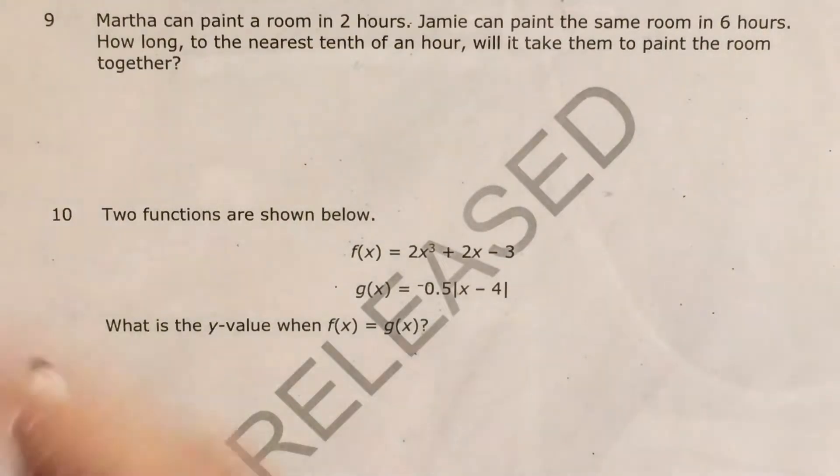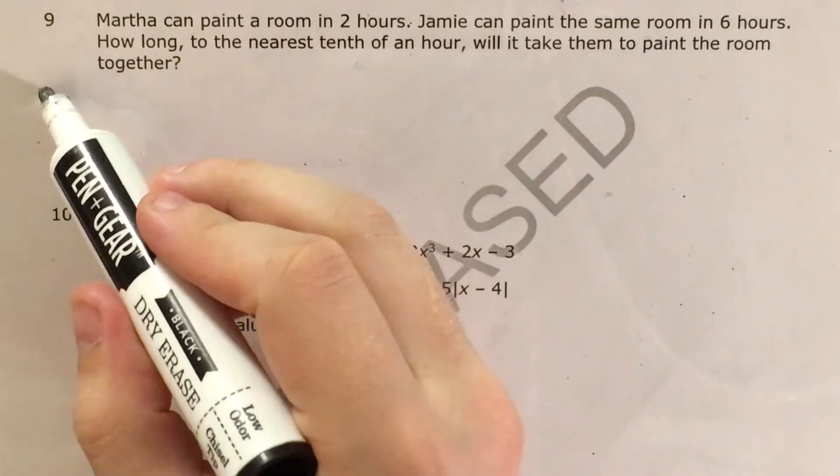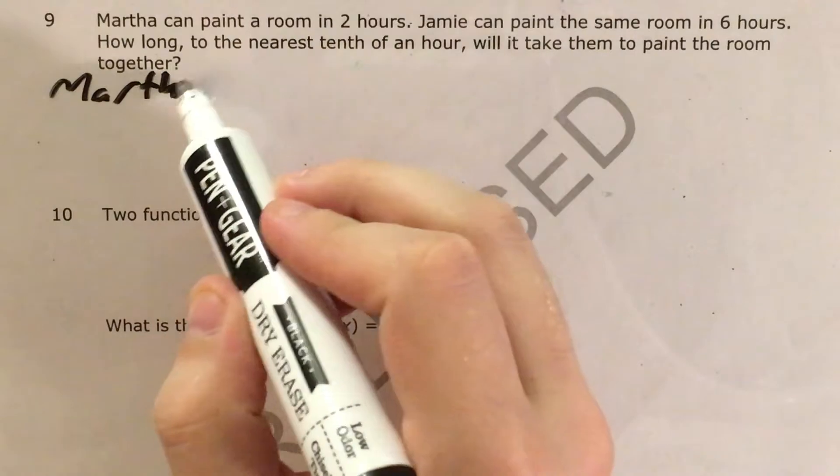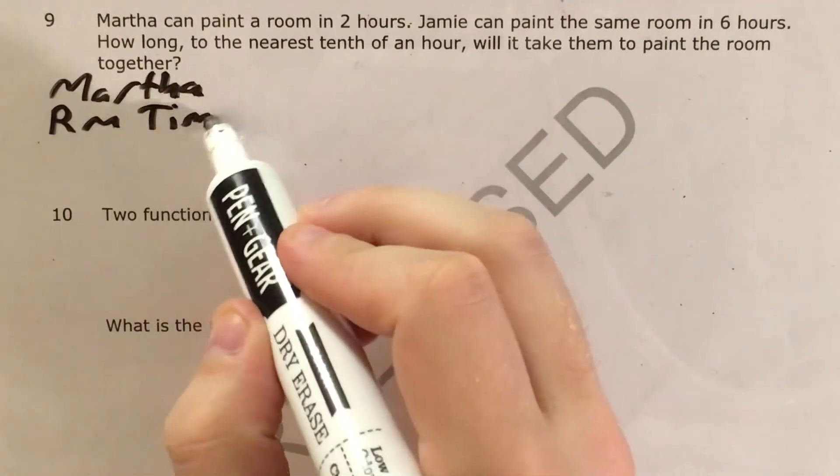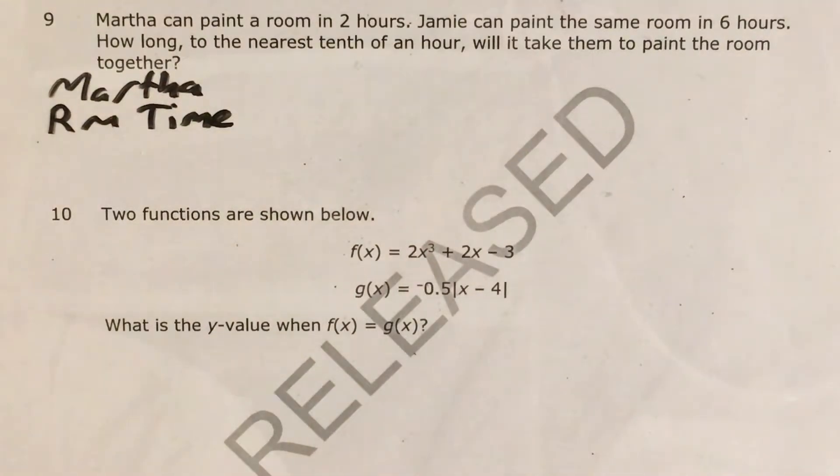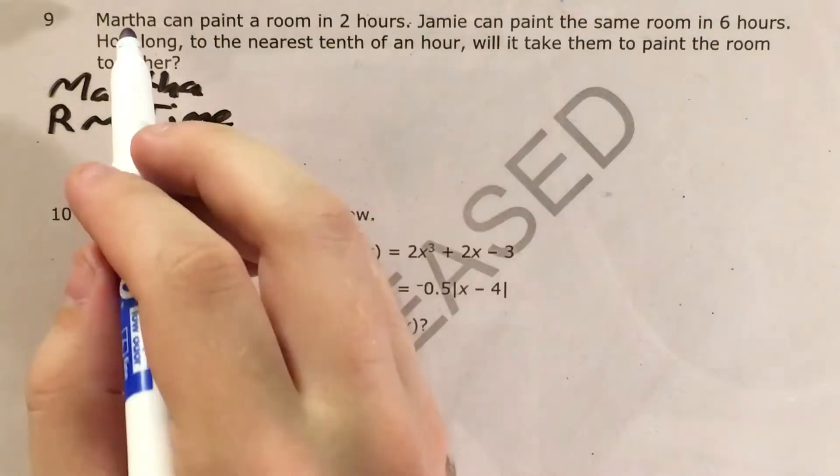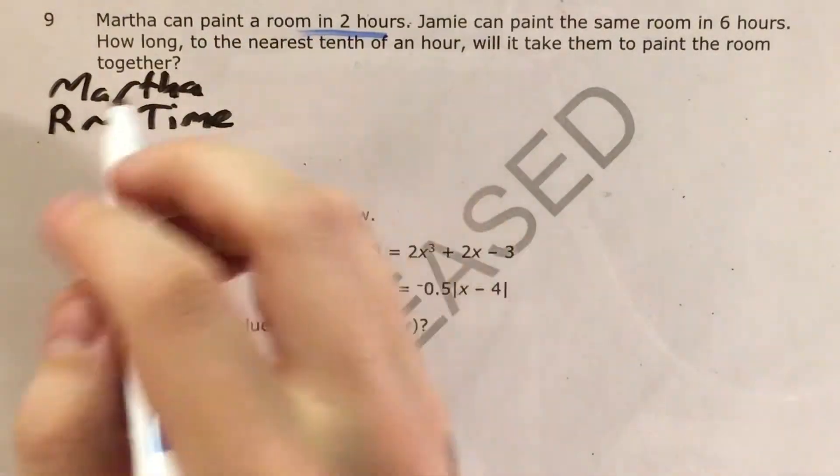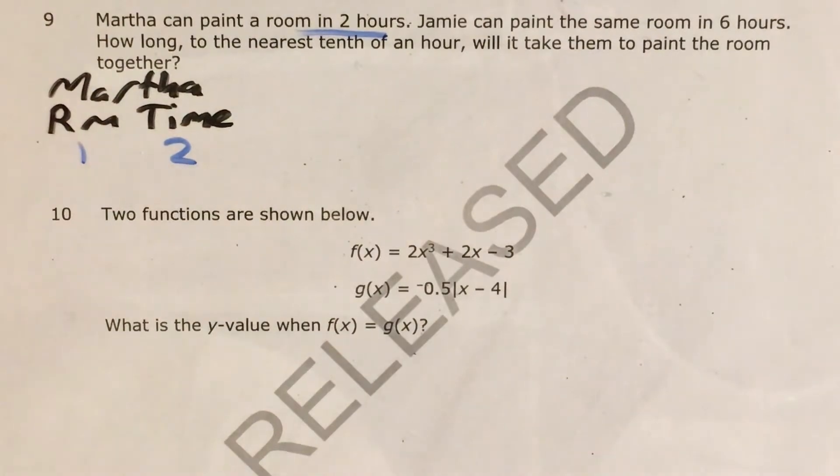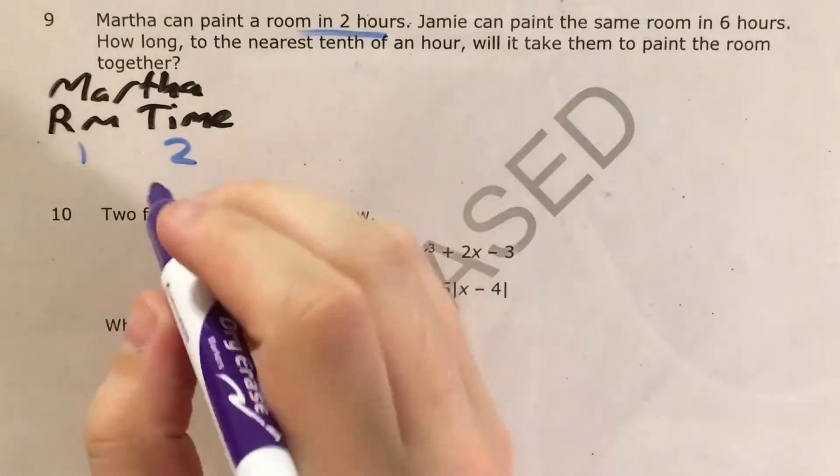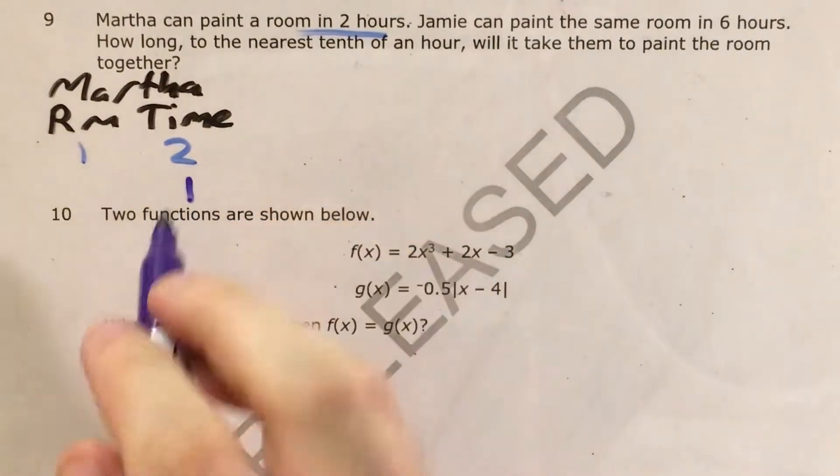So let's go ahead and start with Martha. If we're looking for how much of a room she can paint in a certain amount of time, the problem tells us that she can paint one room in two hours, but in order to do a question like this we need to know how much she can paint in one hour.